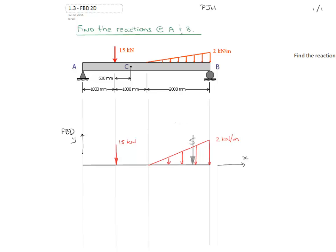So the area under the curve in this case is one-half the intensity, which is 2 kilonewtons per meter, multiplied by the length over which the distributed load is applied, which is 2 meters, and that will give us a value of 2 kilonewtons.